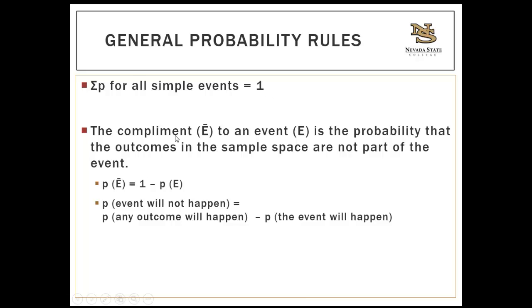The complement to an event is the probability that something will not happen. One represents the probability of any event happening, so you subtract the probability of the specific event to get the probability that event won't happen. For instance, if you want to know the probability of randomly selecting a female and you already know the probability of selecting a male is 0.40, then 1 minus 0.40 gives you 0.60 — the probability of randomly selecting a female.